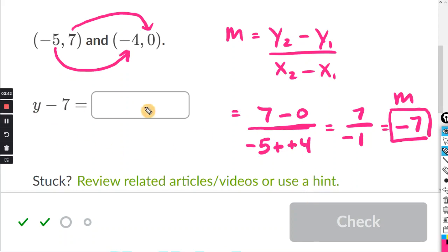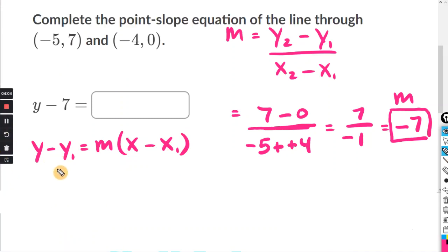Now I want to match the point-slope equation with what they have here. So this is going to be y minus y1 equals m times x minus x1. Now, if you remember at the beginning, I said for x1 and y1, we can use either point. However, they already started the equation for us. So we have to use the same one they did. And here we have y minus 7, y minus y1. So we have to use the point where y equals 7.